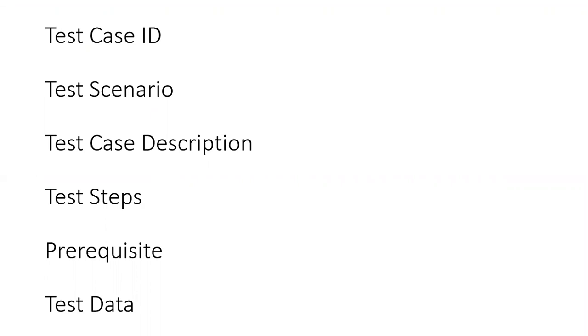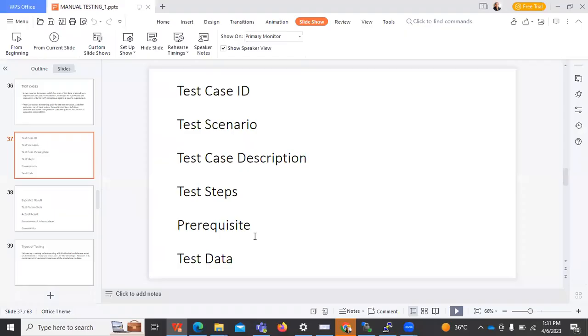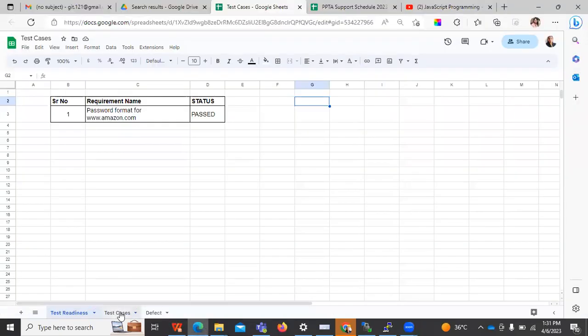Test ID means unique identification. Test scenario means you are developing various scenarios whenever you want to test any product — those scenarios are decided by the tester. Then their description means what that scenario means. Then test steps: which steps you are following. For example, if you want to test the login page, which steps are you doing — like going to that particular website as the first step, then putting in ID and password. I'll show you how that document looks.